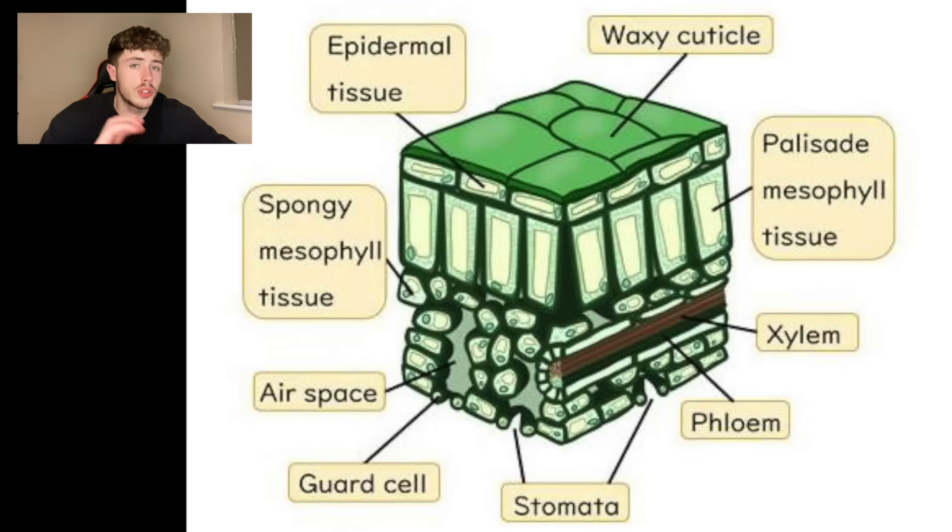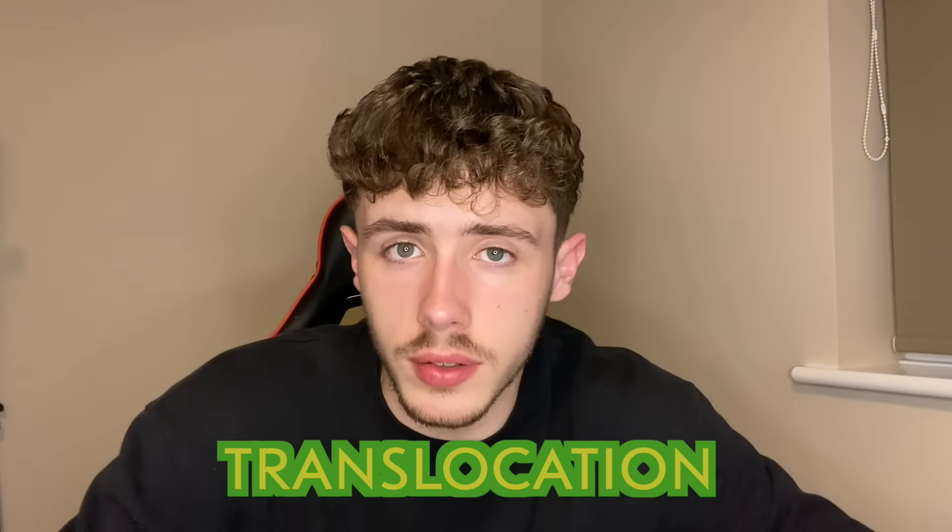Finally within organisation we have plant organisation. Plant organisation involves the structure of a leaf — pause here if you want to have a little read of this — and also the xylem and the phloem. The xylem is where water is transported from the roots up into the rest of the plant in a process called transpiration, and the phloem is where food is transported up and down the plant through a process called translocation.